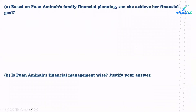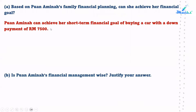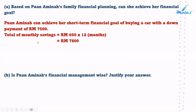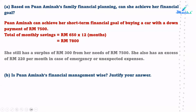Based on Juan Amina's family financial planning, can she achieve her financial goal? Yes, Juan Amina can achieve her short-term financial goal of buying a car with a down payment of $7,500, because her total savings are $650 × 12 months = $7,800 — a surplus of $300 beyond the required $7,500. She also has an excess of $220 per month in case of emergency or unexpected expenses.